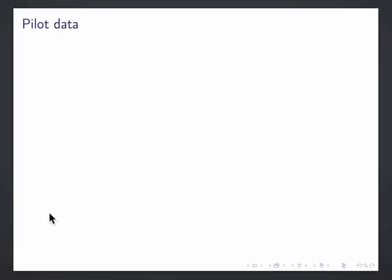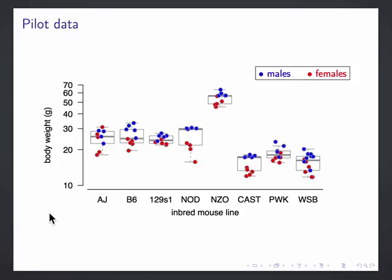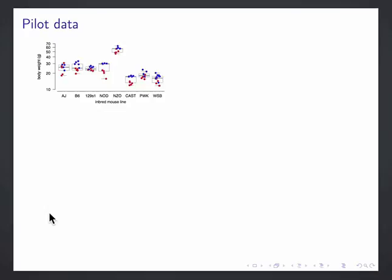But they do often arise in an incomplete form inadvertently through standard collection of pilot data. And so here's an example. I'm just going to use body weight as an example phenotype. And this is data from eight inbred mouse lines on males and females. And this is the kind of pilot data that a mouse geneticist might collect who's interested in trying to dissect the genetic basis of weight. And they look at these lines and think, maybe some of the contrasting lines are good things to do an F2 cross on.